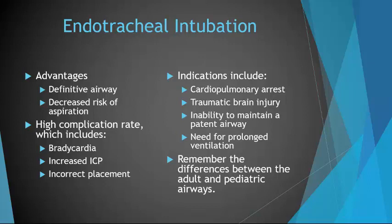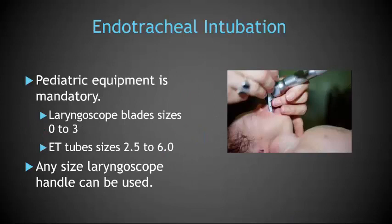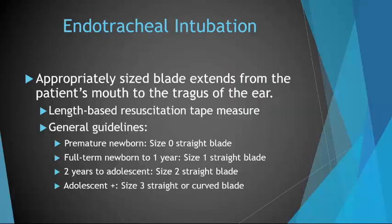When intubating a pediatric patient, you must remember the anatomical differences between the adult and pediatric airways and use pediatric equipment. Laryngoscope blade sizes 0 to 3 are used, with small children requiring Miller or straight blades. You can use any size laryngoscope handle. The appropriately sized blade extends from the patient's mouth to the tragus of the ear.